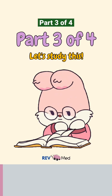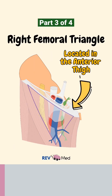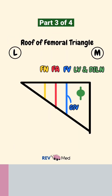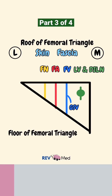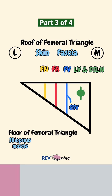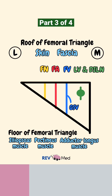You need to know this important info about the femoral triangle. The roof of the femoral triangle is made of the skin and the fascia. The floor, from lateral to medial, is the iliopsoas muscle, the middle part is the pectineus muscle, and the most medial part is the adductor longus muscle.